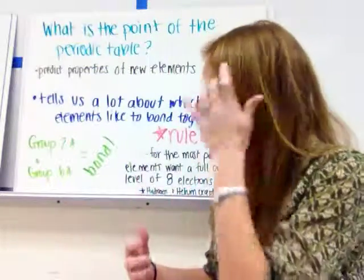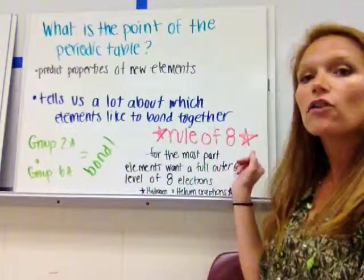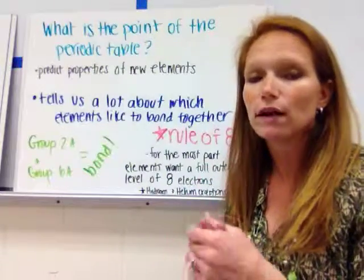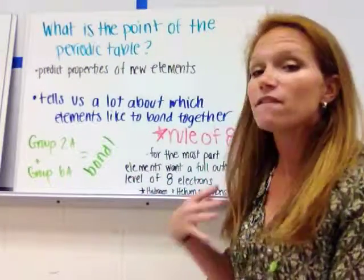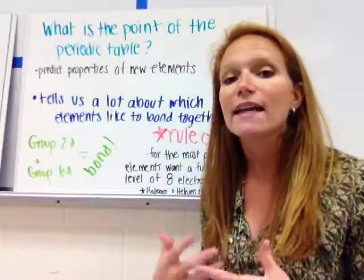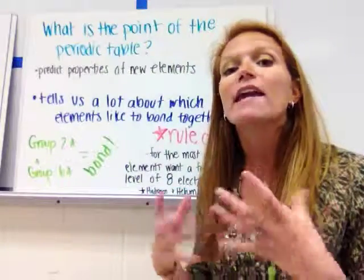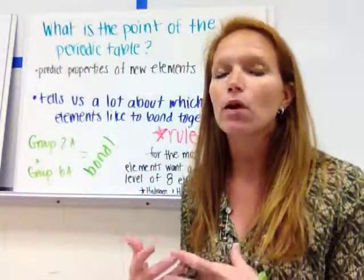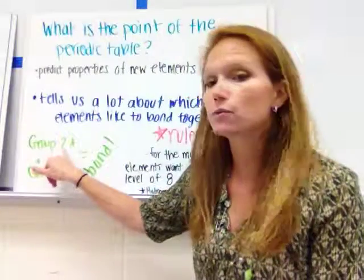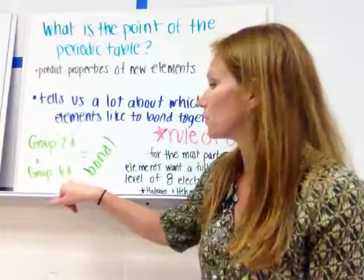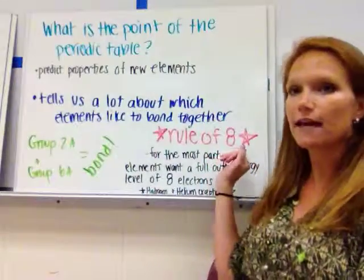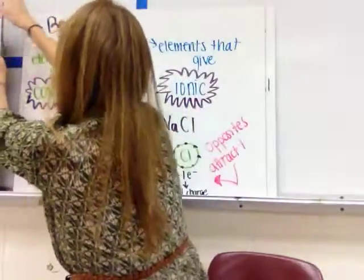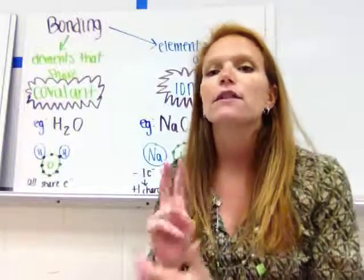There's the rule of eight, which says that for the most part elements want eight electrons in their outer energy level — eight valence electrons, because eight is full for them. The two exceptions are hydrogen and helium, which only have two electrons in their outer energy level. So for example, most elements in group 2A would bond with an element from group 6A because 2 plus 6 equals 8.